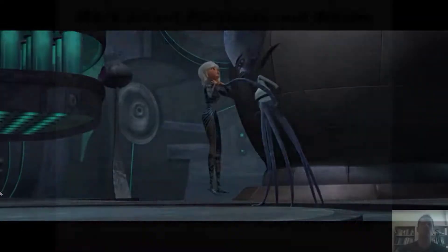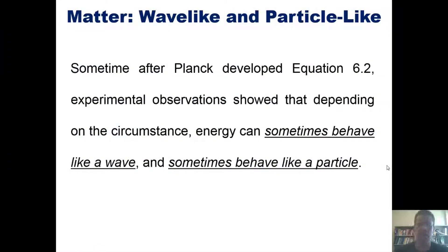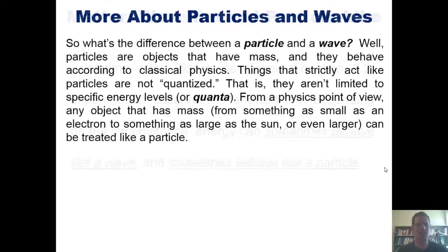So sometime after Max Planck developed equation 6.2, experimental observations showed that depending on the circumstance, energy can sometimes behave like a wave and sometimes behave like a particle. So what's the difference between a particle and a wave? Particles are objects that have mass and they behave according to classical physics. Things that strictly act like particles are not quantized. That is, they aren't limited to specific energy levels or quanta. From a physics point of view, any object that has mass, from something as small as an electron to something as large as the sun or even larger, can be treated like a particle.